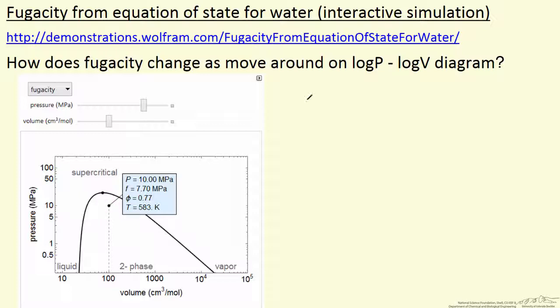and of course the fugacity coefficient is just the fugacity over the pressure for a pure material, and it also reads off the temperature. The point can be moved by changing the pressure or changing the volume.